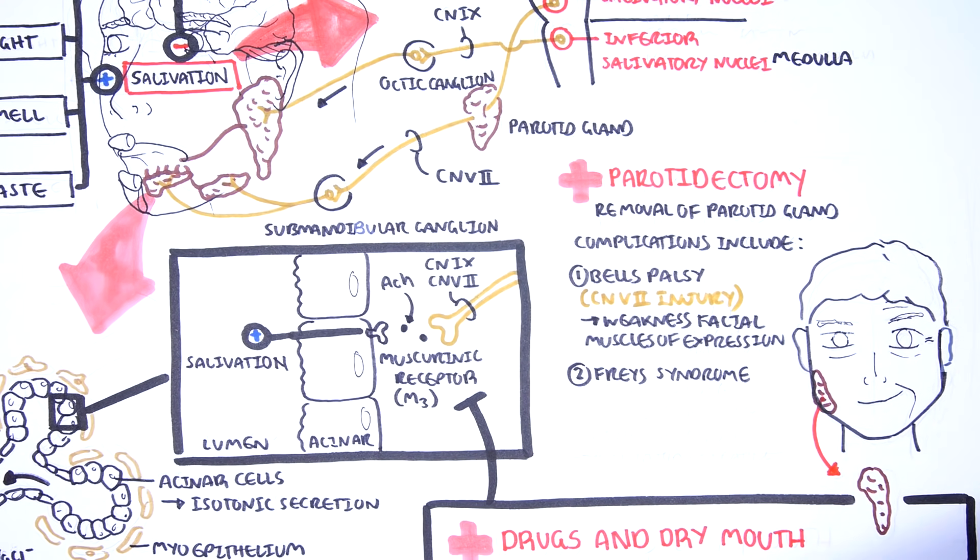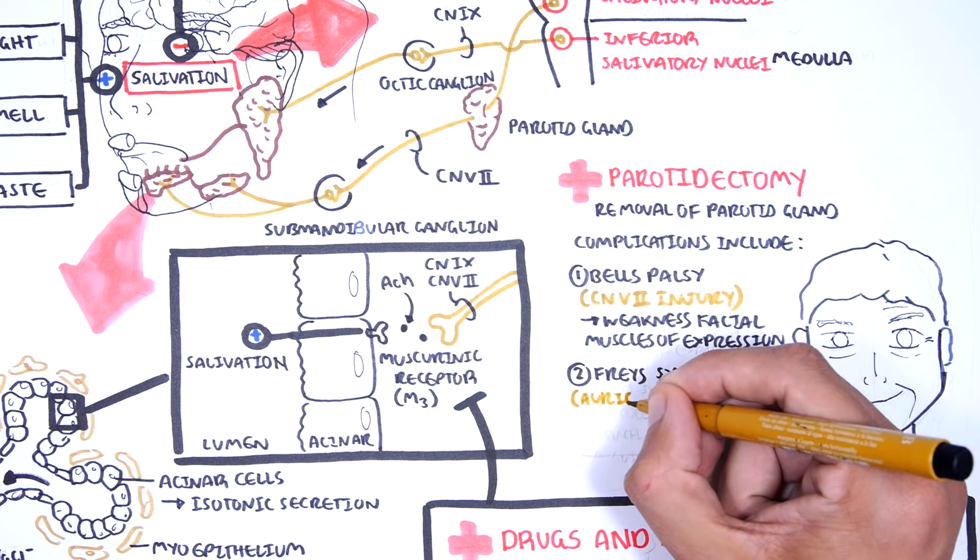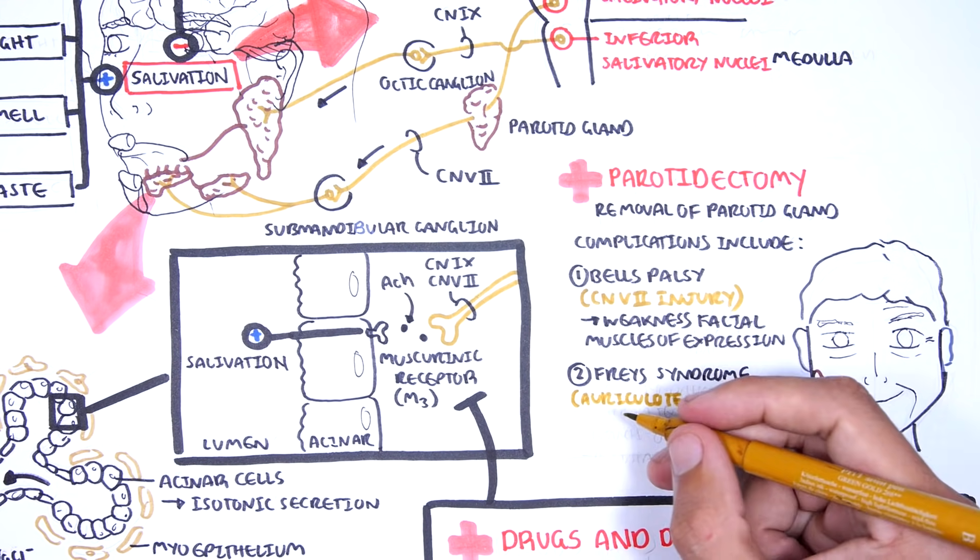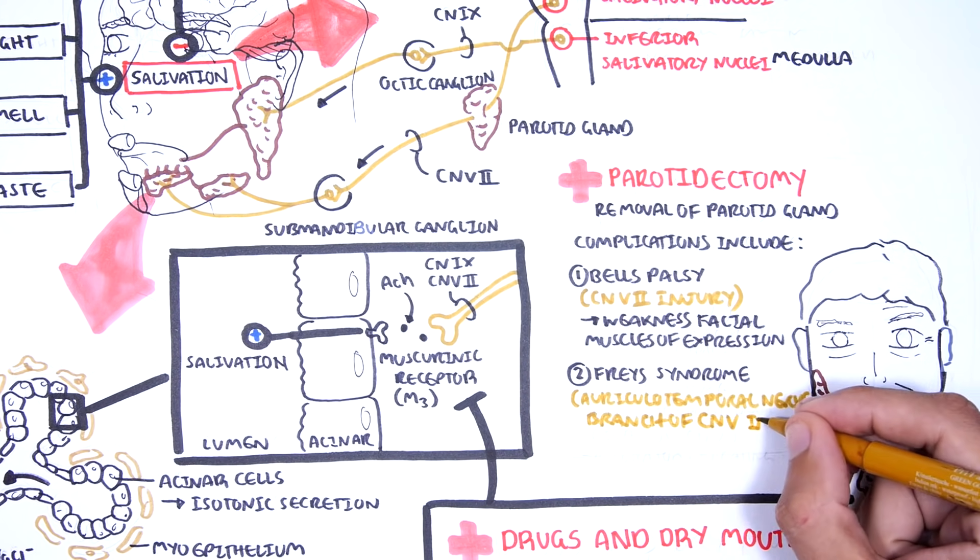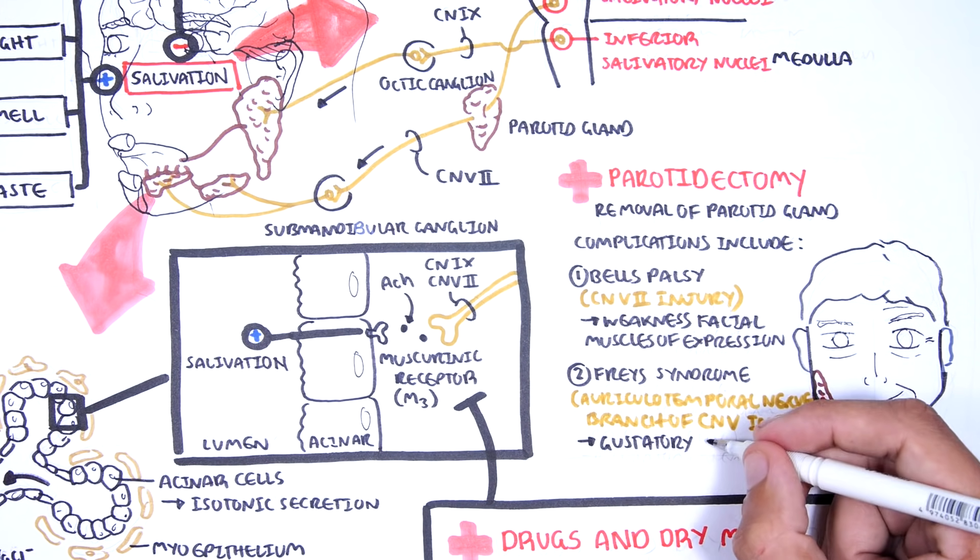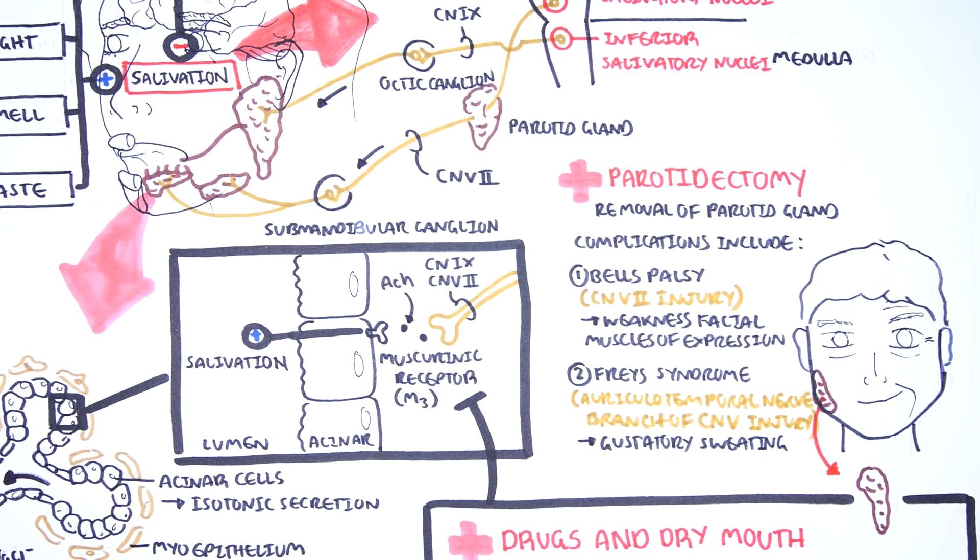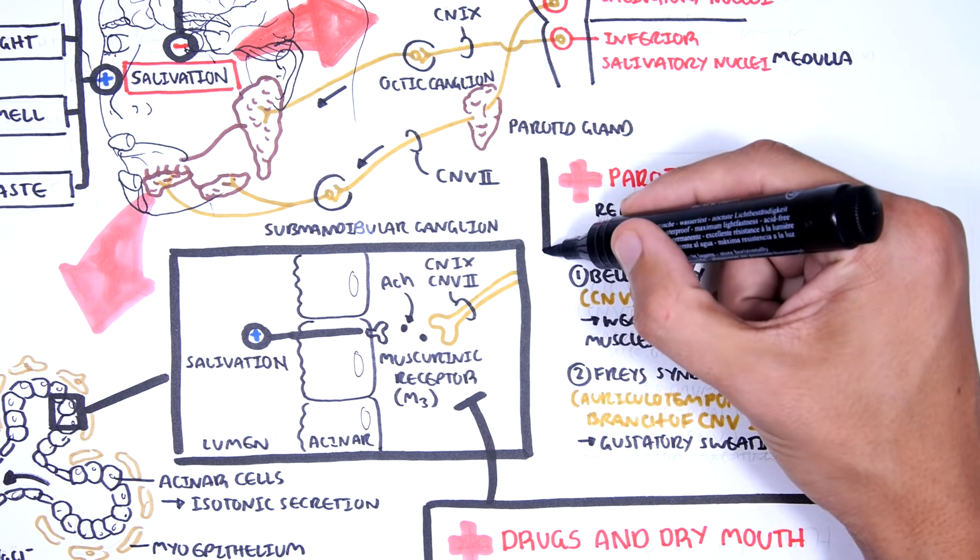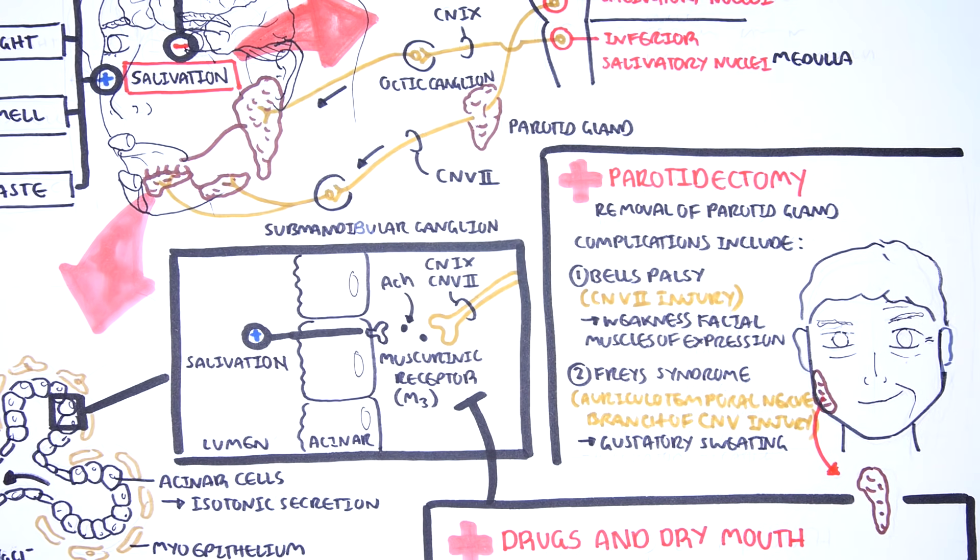Frey's syndrome is another interesting complication of parotidectomy. This is caused by auriculotemporal nerve injury, which is a branch of cranial nerve number 5, the trigeminal nerve. Injury to the auriculotemporal nerve will cause the affected side to have gustatory sweating, which is symptoms of profuse head and neck diaphoresis and flushing with eating.